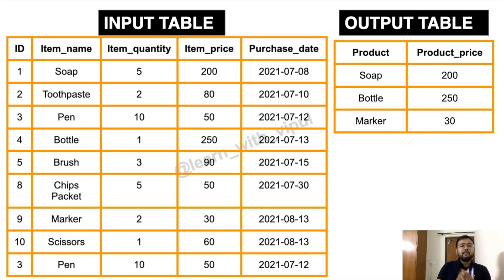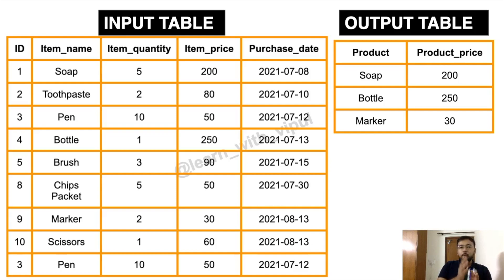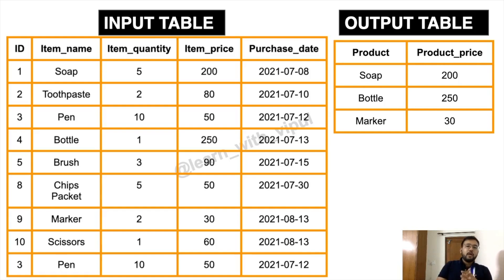There are two things to note. First, the difference in column names: in the input table items are shown as item_name, whereas in the output table it is shown as product. Similarly, item_price in the input becomes product_price in the output. Second, the number of rows: the input table has 11 rows whereas the output has just three rows. So let's go to MySQL Workbench for the solution.